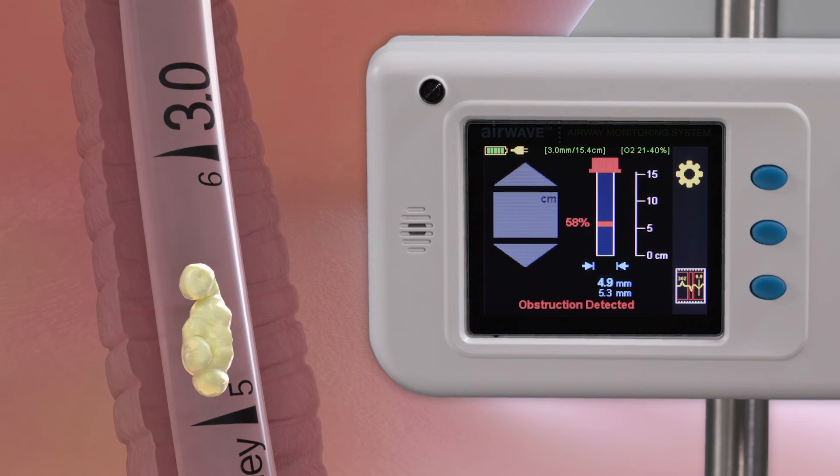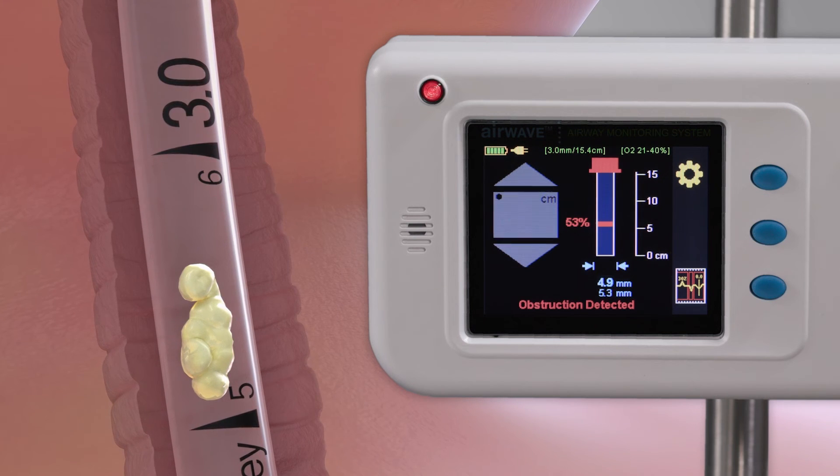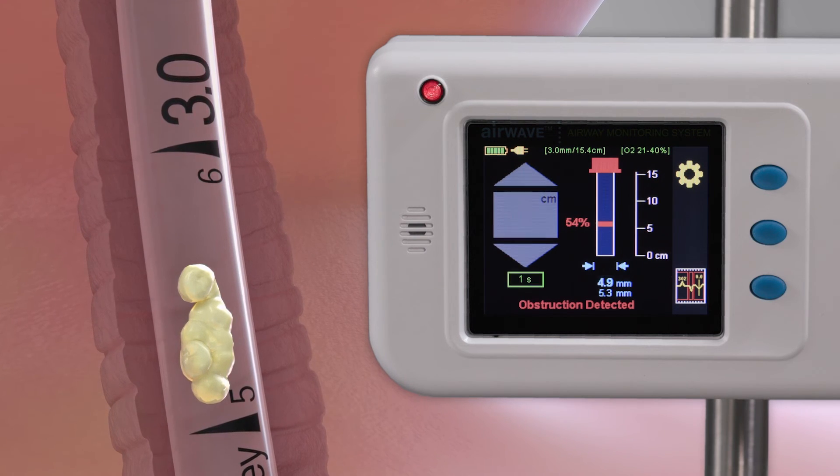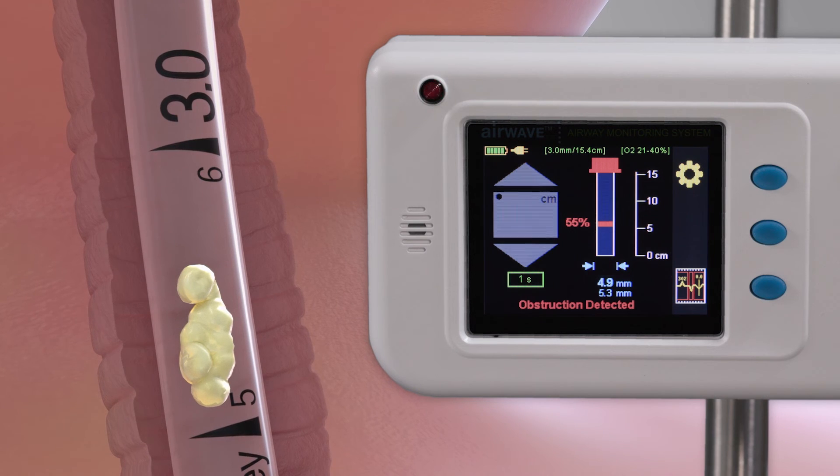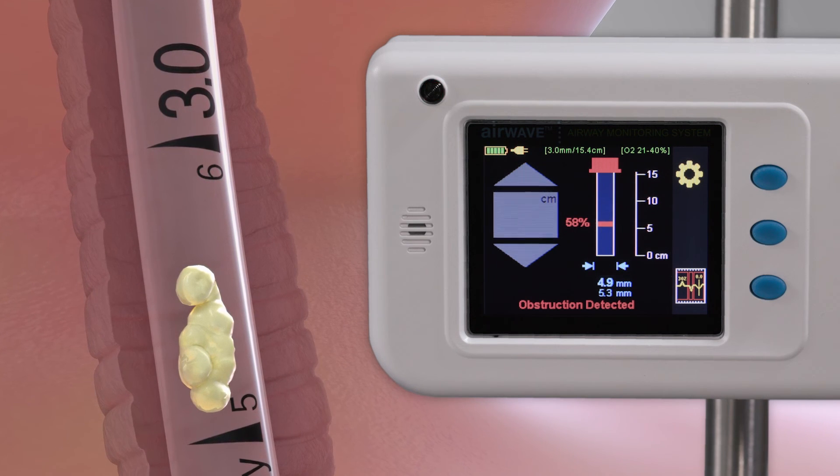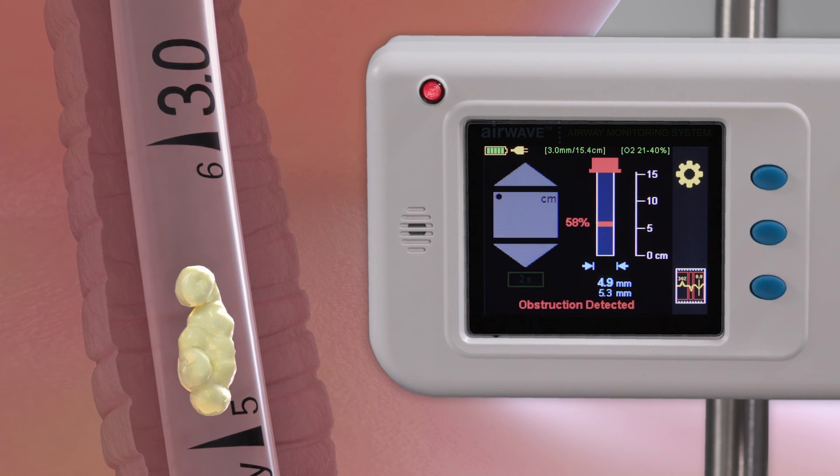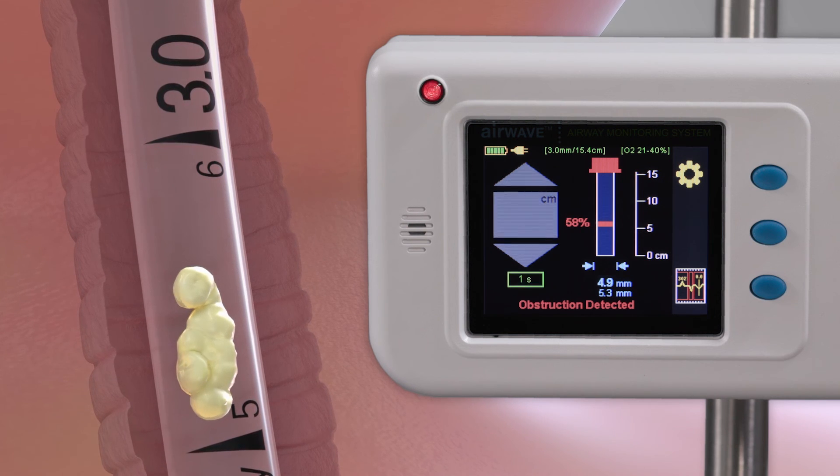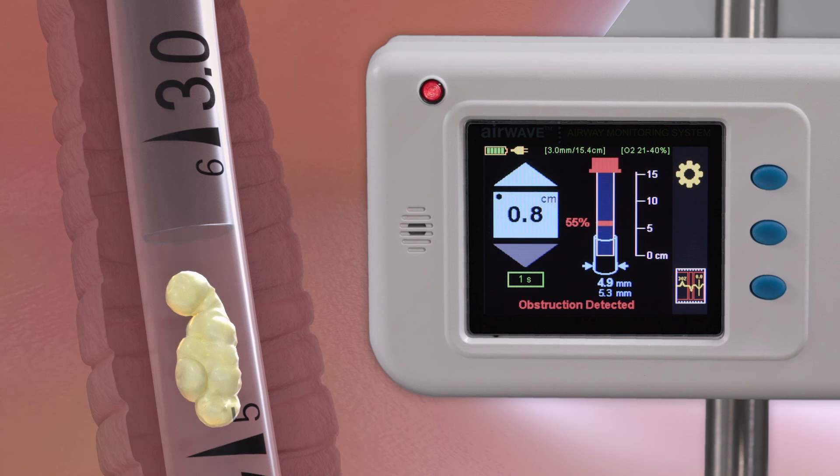When an obstruction is detected, the SonarMed device will display the location of the obstruction in relation to ETT depth markings. It will also indicate the percentage obstructed within the endotracheal tube, which may allow for more optimal suctioning practices.